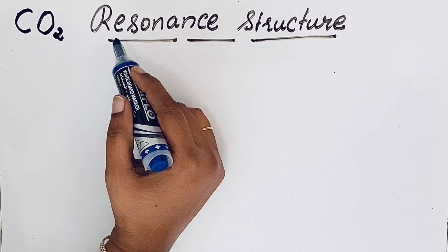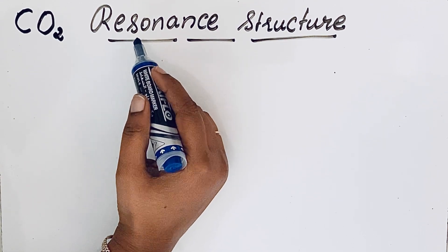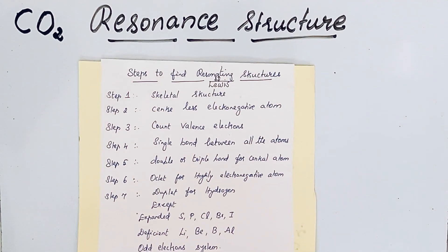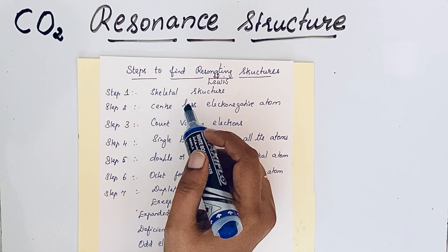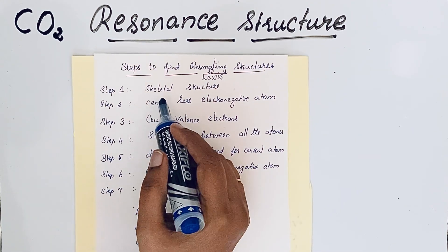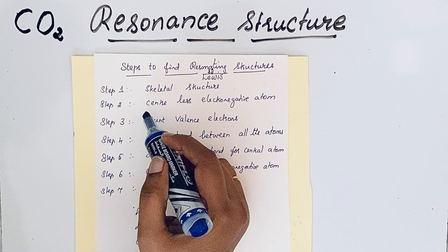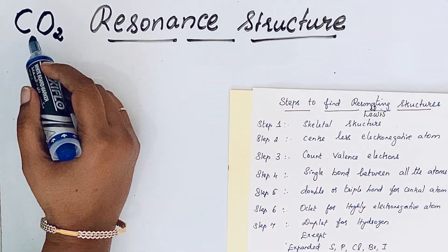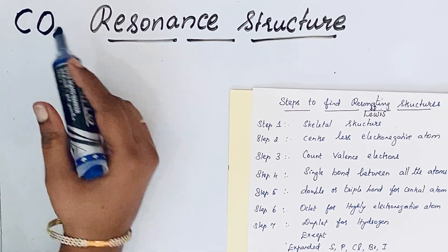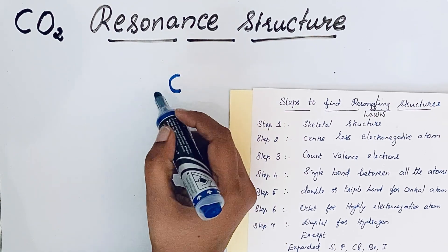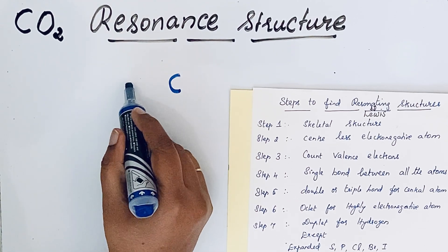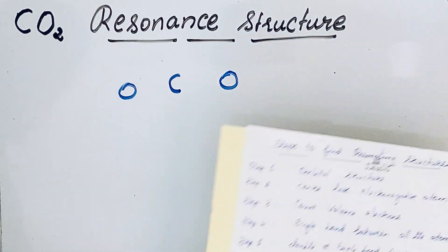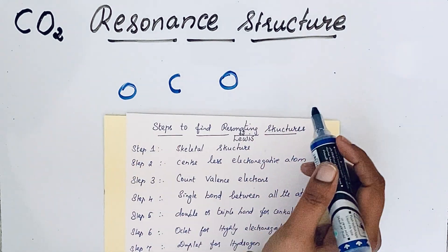Now let's see how to write the resonance structure for carbon dioxide. To write the CO₂ resonance structure, we first need to write the Lewis structure. Step one: write the skeletal structure. The center atom should be the less electronegative atom. In carbon dioxide, carbon is less electronegative, so we draw carbon in the center with the oxygen atoms around it.